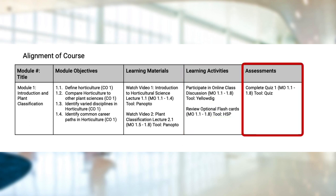The last column in the course map is for assessments. Assessments are how the instructor measures how well the students have met the module objectives. Just like with materials and activities, assessments are aligned with module objectives and indicate the tools that learners are expected to use to complete them.